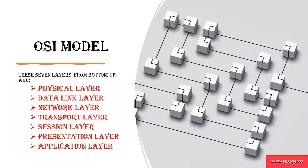The OSI model consists of 7 layers from bottom to top. Layer 1 is the physical layer, layer 2 is the data link layer, layer 3 is the network layer, layer 4 is the transport layer, layer 5 is the session layer, layer 6 is the presentation layer, and the final layer is the application layer. These are the 7 layers from bottom to top.